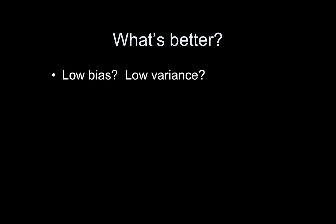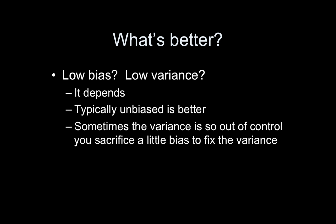But a lot of the things we work with, you'll see, are unbiased. And, right, I already mentioned this. Sometimes the variance is so out of control that we sacrifice a little bias to fix the variance. When I talk about collinearity, this will probably come up. And again, ridge regression and the lasso or lasso, depending on where you live, are used for this.